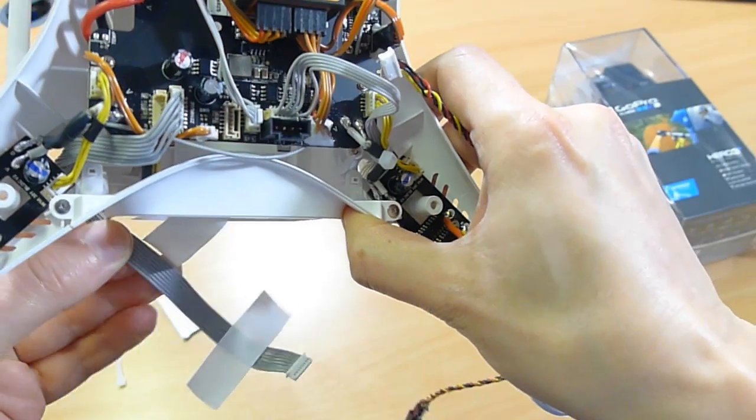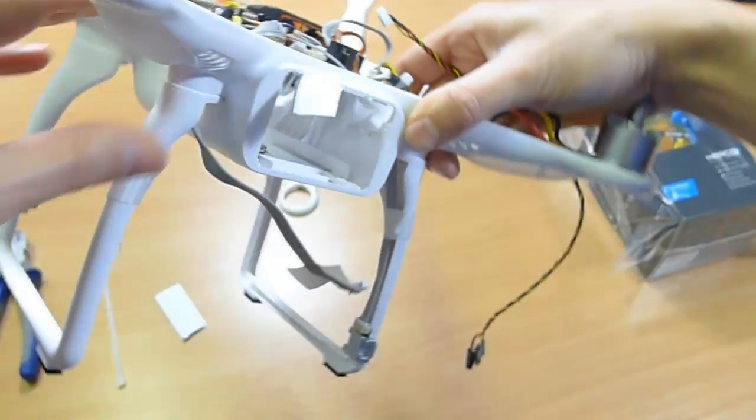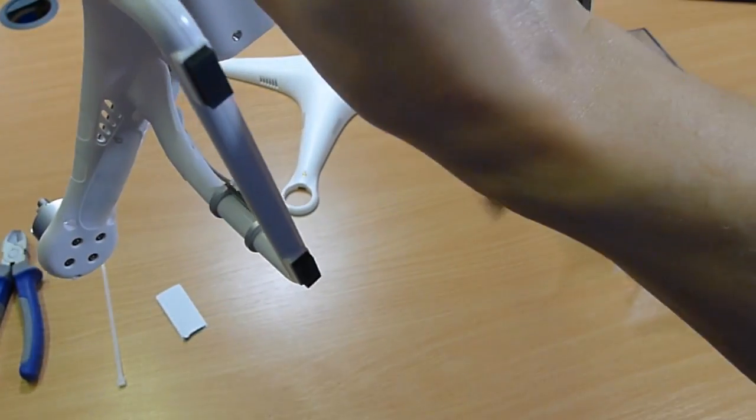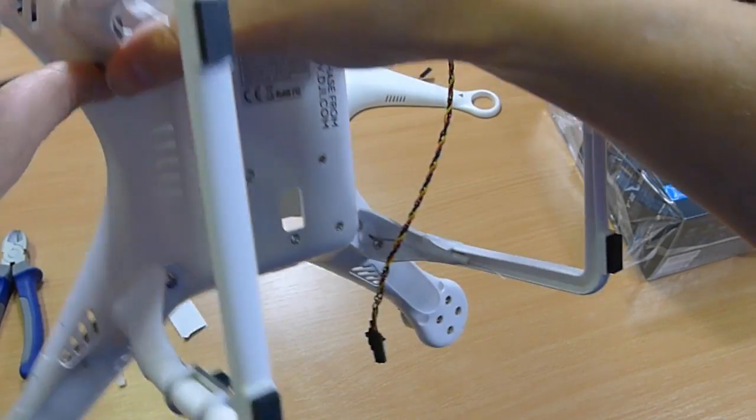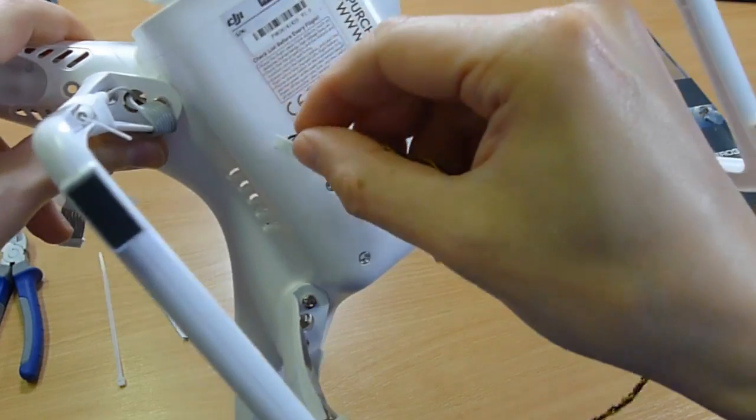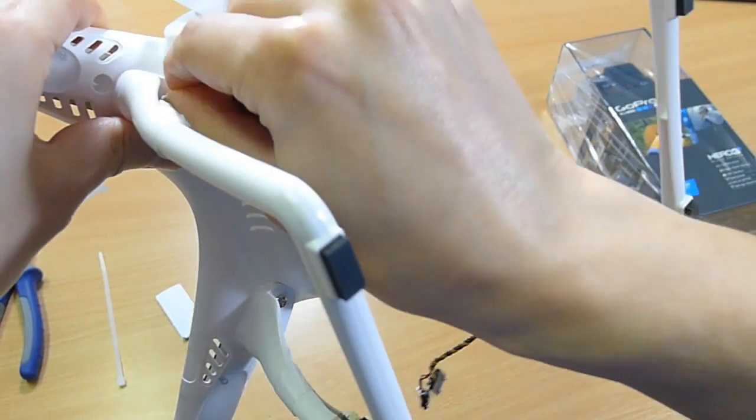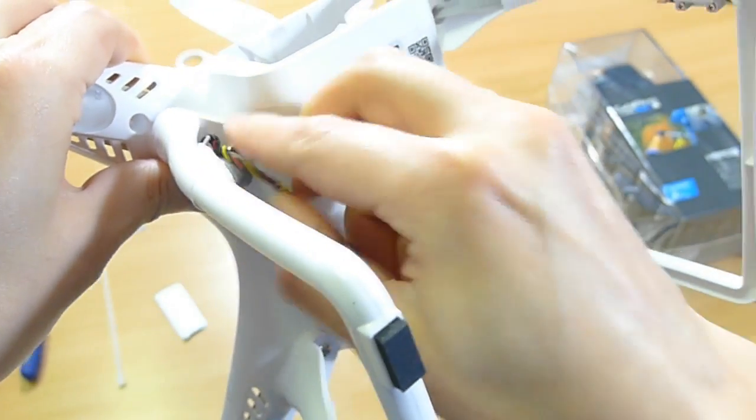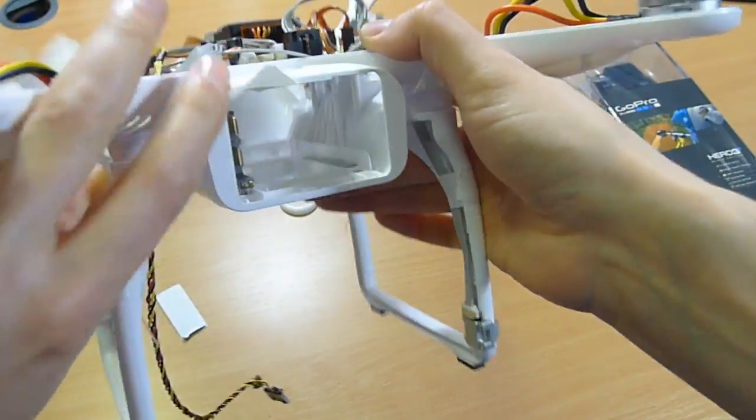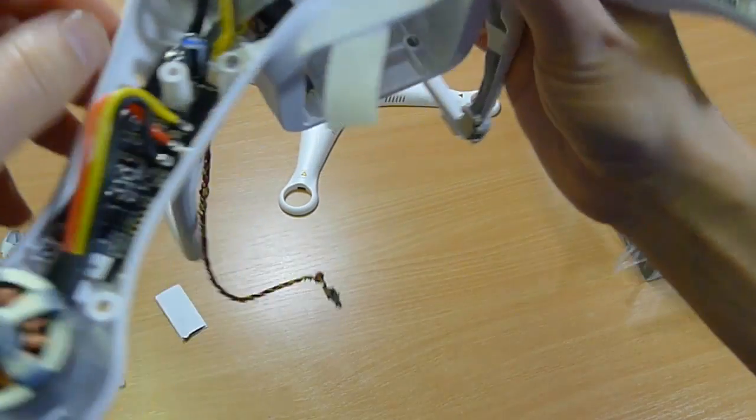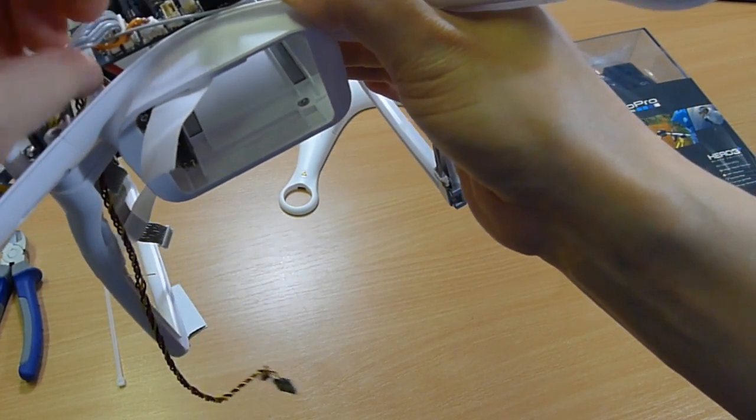So I've just moved the Zenmuse cable out of the way, and I'll poke this through the hole. Not the easiest thing to do on camera, but poke that through there. There we go. There it is.